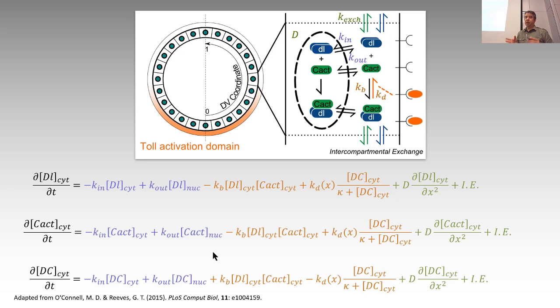So if I want to use the model for prediction, I'm going to come up with multiple different kinds of predictions, because I don't know where in parameter space I actually am. What I'd really like to do is narrow down where I am in the parameter space by directly measuring some of these parameters, like the diffusivity or the nuclear import/export rates.